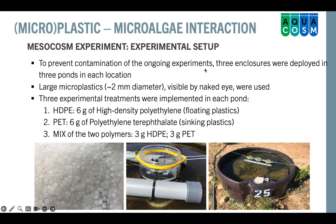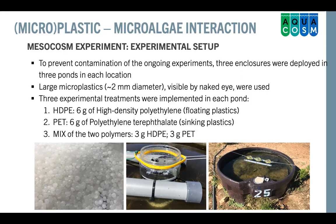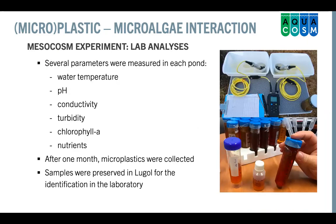We implemented three different treatments: in the first, we incubated six grams of high-density polyethylene (HDPE); in the second, six grams of polyethylene terephthalate (PET); and a third with a mix of these two polymers. We had five sites, three different ponds per site, and three samples for each pond — HDPE, the mix, and PET. In each pond we measured water temperature, pH, conductivity, turbidity, chlorophyll-a, and nutrients. We incubated the plastics and waited 30 days. After one month, the plastics were collected, the surface was scraped, and samples were preserved in Lugol's solution for subsequent identification in the laboratory.